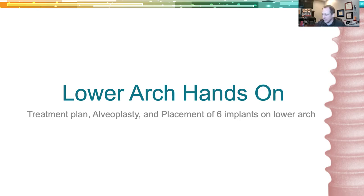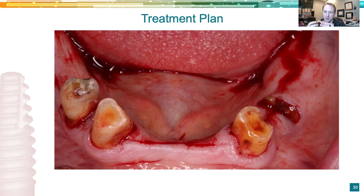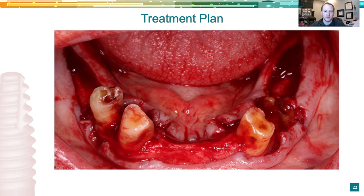Here at the Pathway hands-on, here's a model before we've done our alveoplasty — I've got the nerve filled in with light body polyvinyl. This is an actual patient case: Michelle has some terminal teeth — three teeth and one root left. We're going to make a plan for an overdenture. We plan it on the CBCT with proper reduction of 12 to 15 millimeters from the occlusal plane. We'll do short 4×6 BioHorizons tapered shorts in the posterior, and 3×8×12 BioHorizons tapered pros in the anterior.